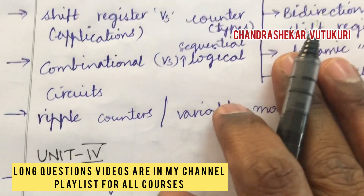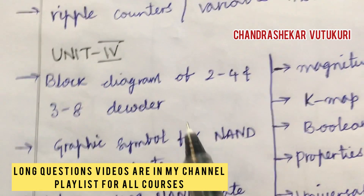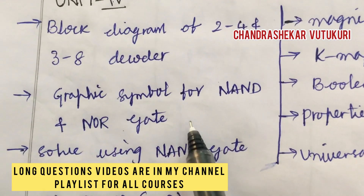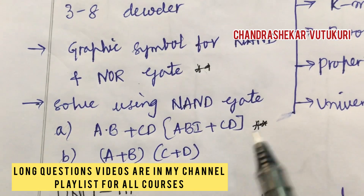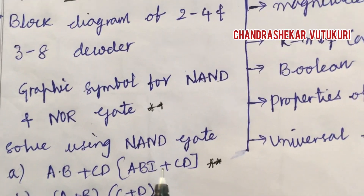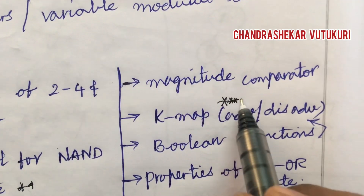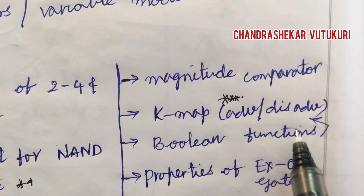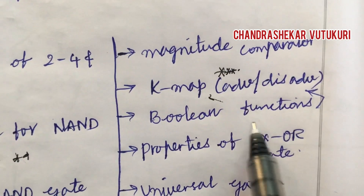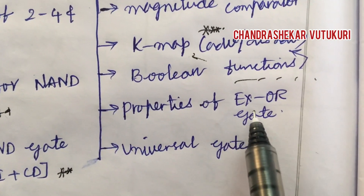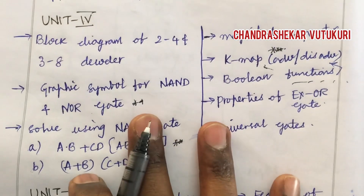Unit 4 questions include: block diagram of 2-to-4 and 3-input decoders, graphic symbol for NAND and NOR gates — these are very important. Solving using NAND gate and such relations are also very important. The magnitude comparator and K-map are the top-most questions, also appearing in long questions. Advantages and disadvantages, using Boolean operations with K-map, simplifying expressions, properties of XOR gate, and universal gates — these are the Unit 4 short questions for 5-mark, 2-mark, and 3-mark splits.